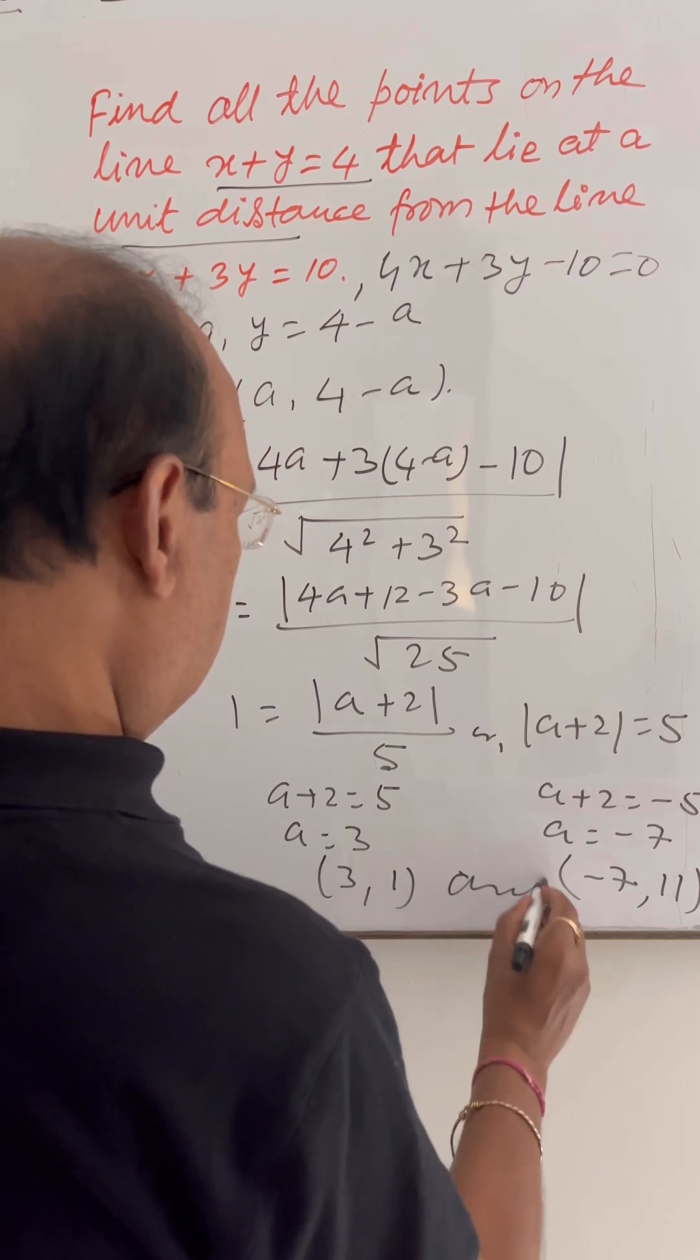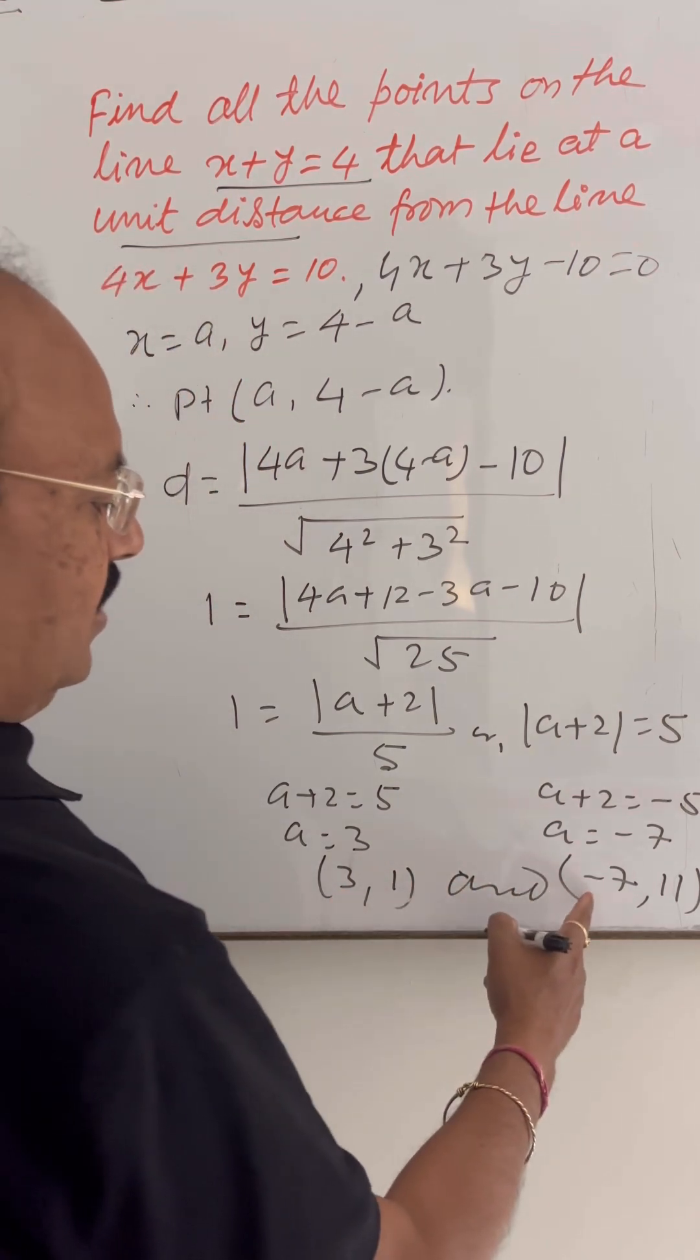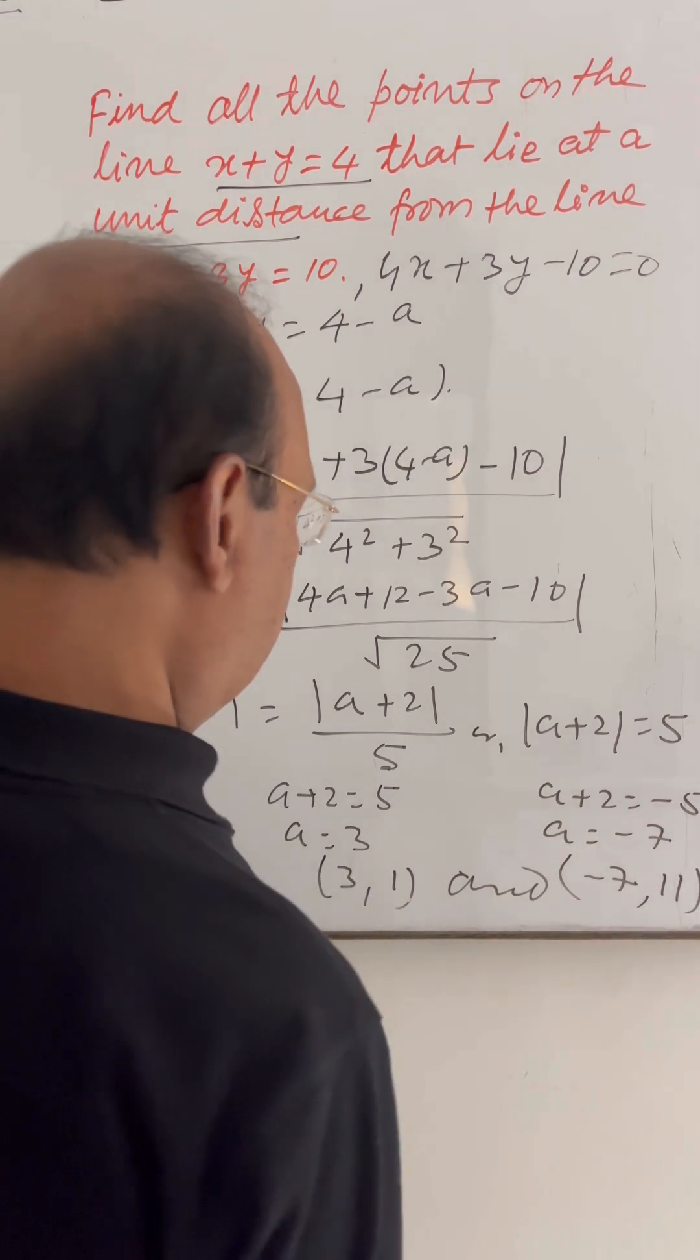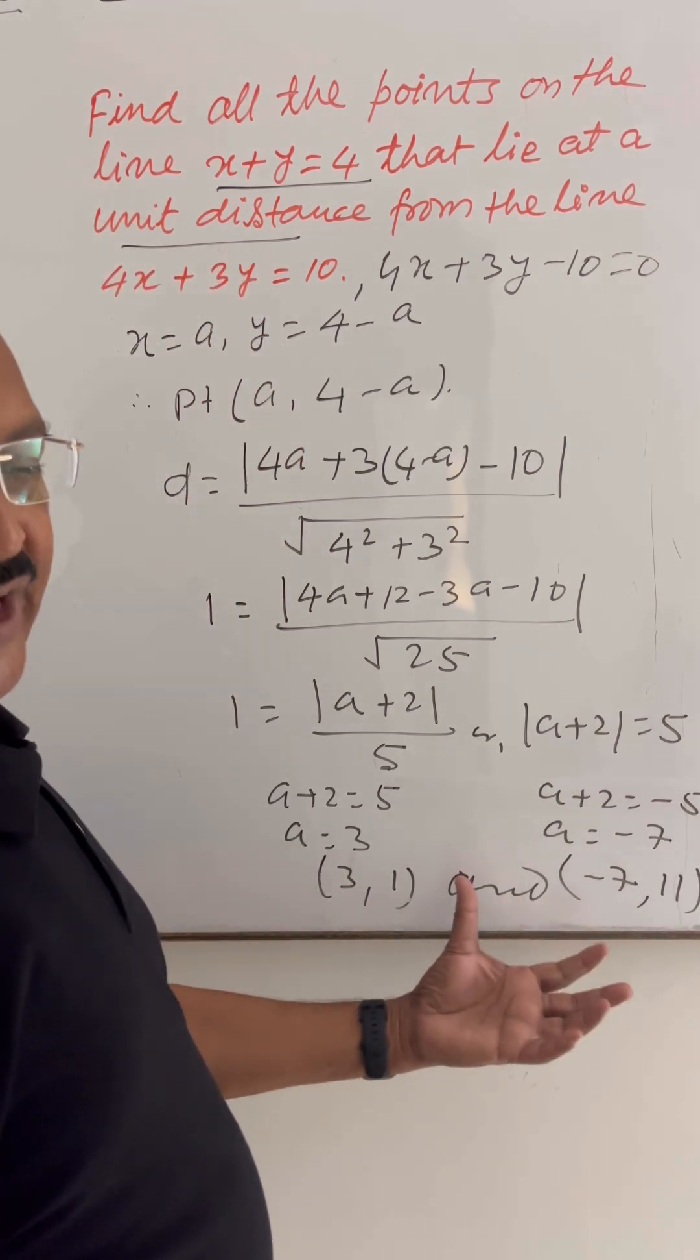So, the points are 3, 1 and minus 7, 11. So, this is the answer. These are the coordinates of the required points.